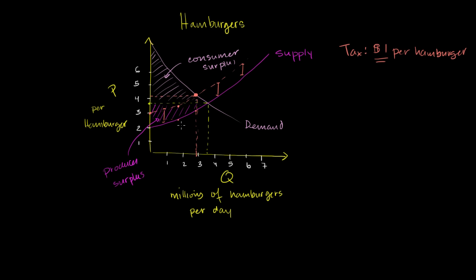What happened? Before the tax, the entire area between the supply and demand curves was total surplus — below the price line was producer surplus, above it was consumer surplus. Now we've lost part of it. This lost portion is our deadweight loss — it's no longer part of total consumer and producer surplus. So the taxation moved us from an efficient situation with maximum total surplus to a less efficient one.